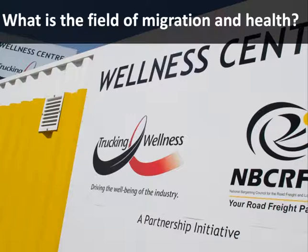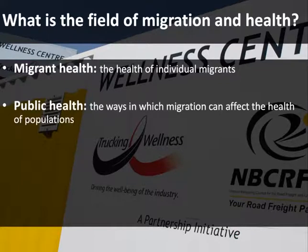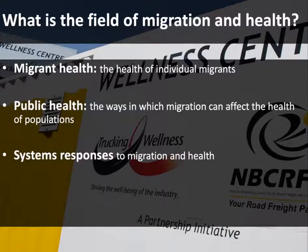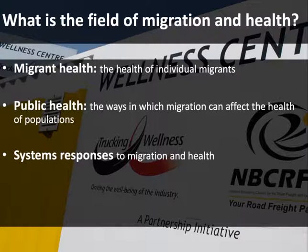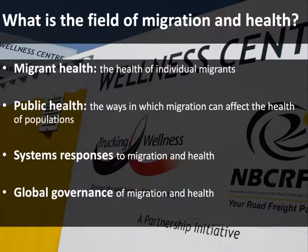What is the field of migration and health? There are four key areas. First, migrant health — the health of individual migrants and the impact migration may have on individuals who move. Second, a public health approach — how migration as a process can affect the health of populations. Third, systems responses to migration and health; a whole-of-government response is needed to embed migration and mobility within systems planning. And finally, global governance systems and where global governance of migration and health fits. I'm now going to go through some key governance frameworks before looking at more specific issues.